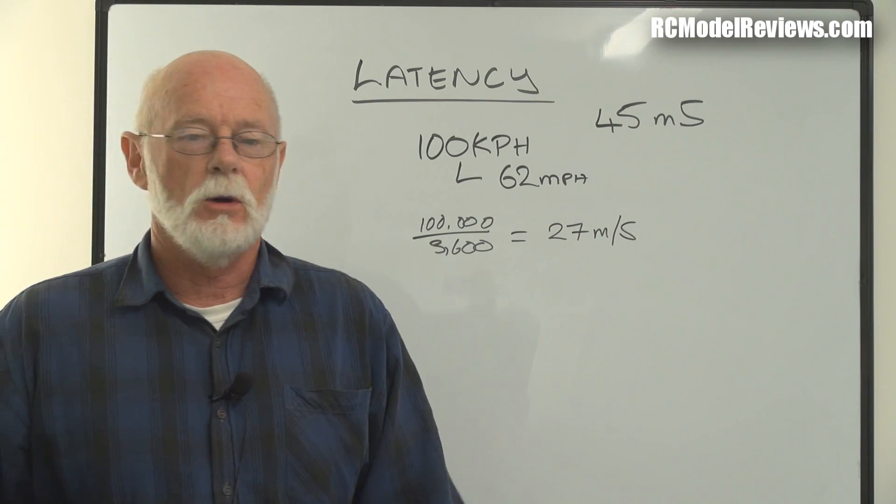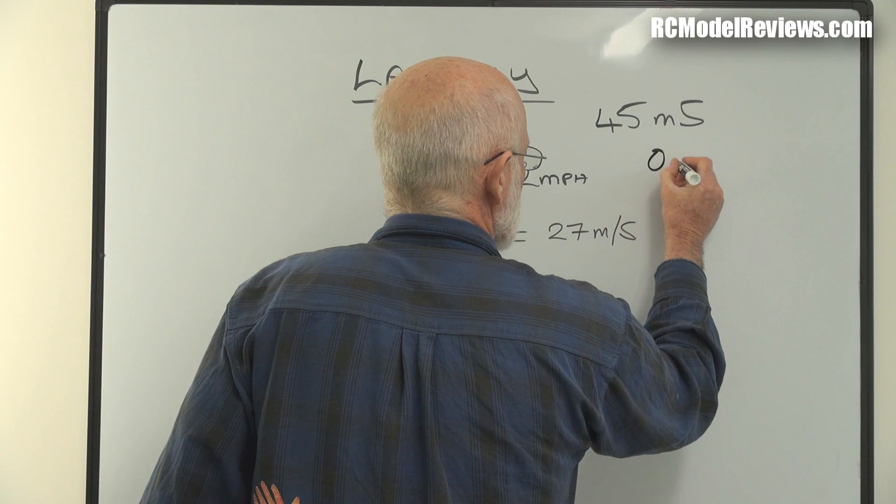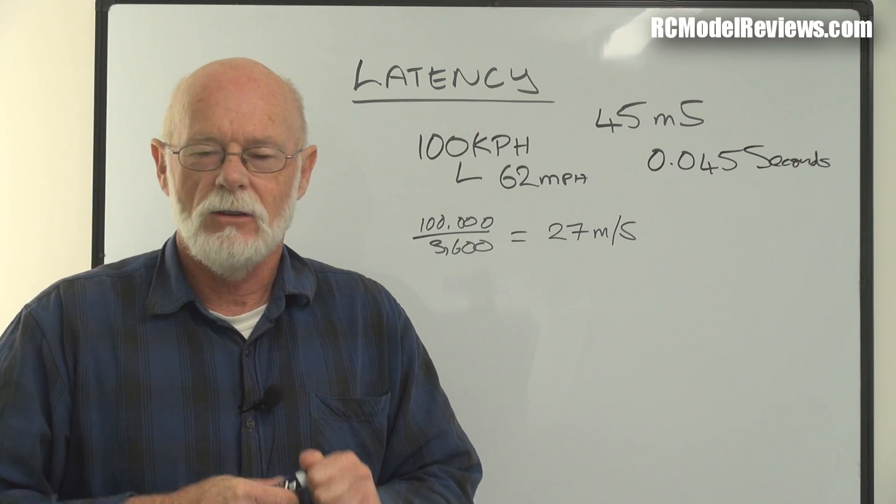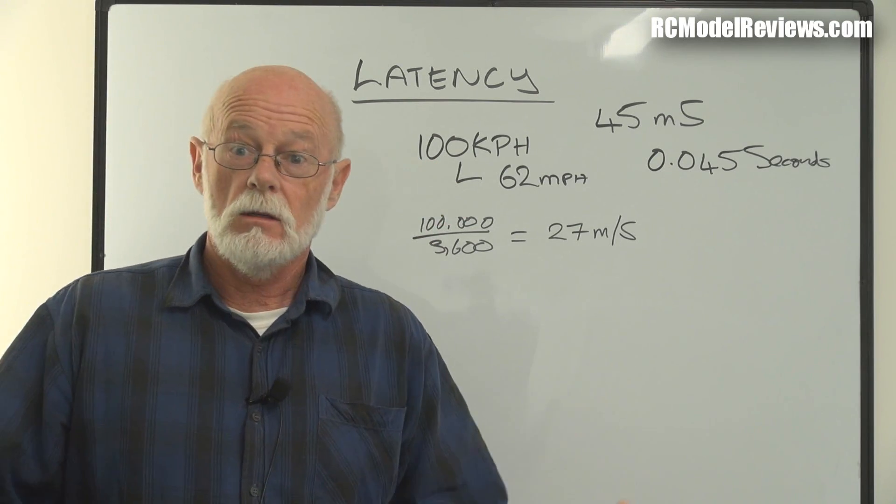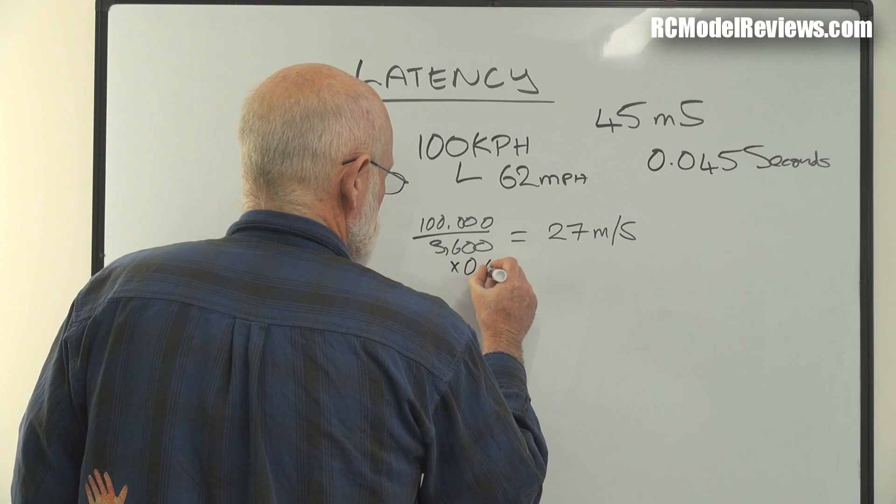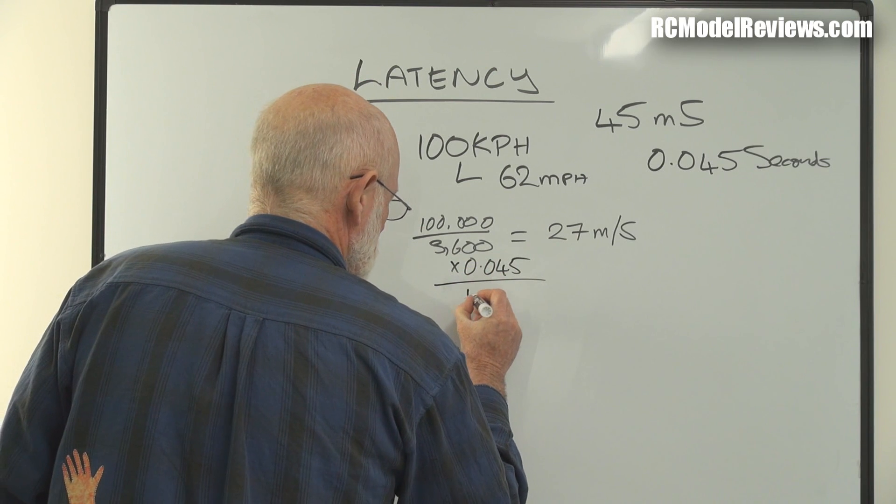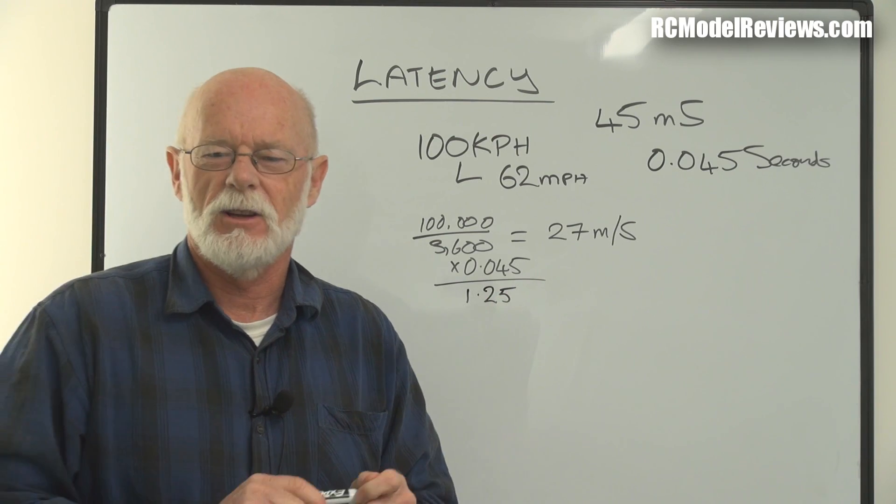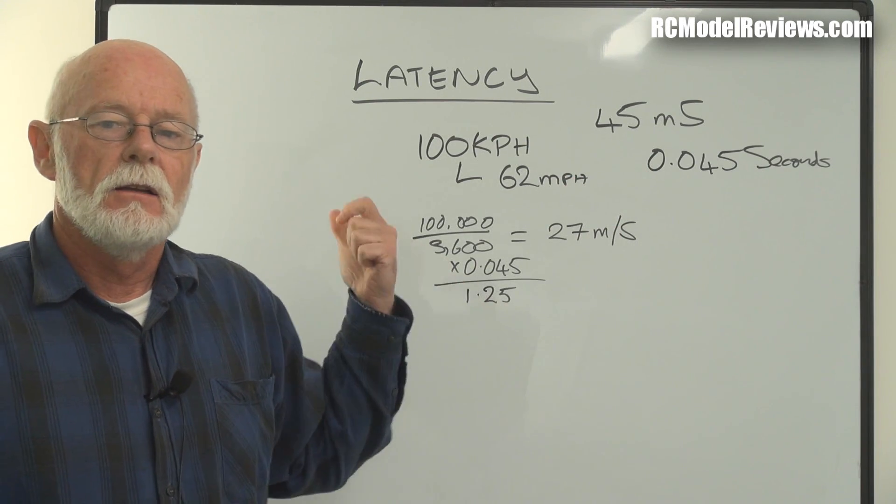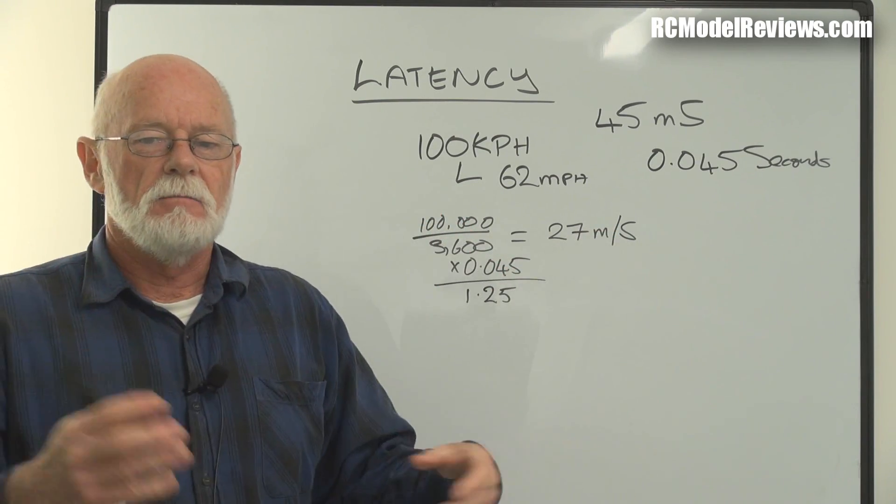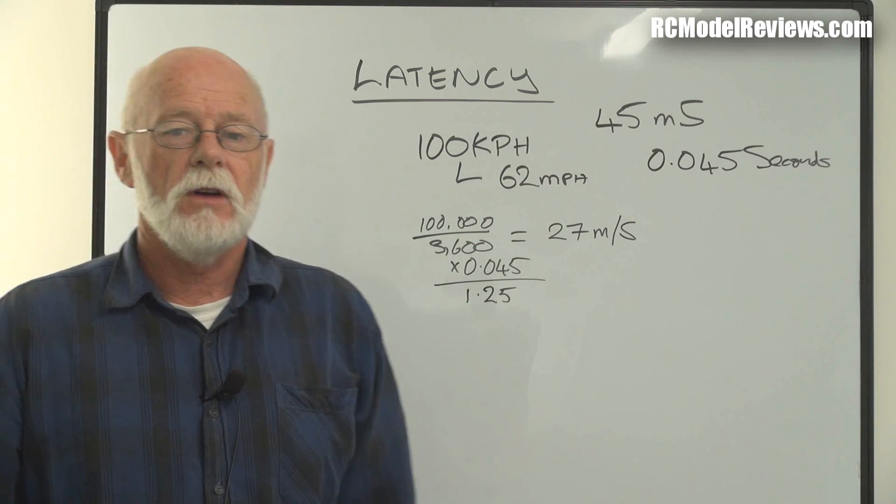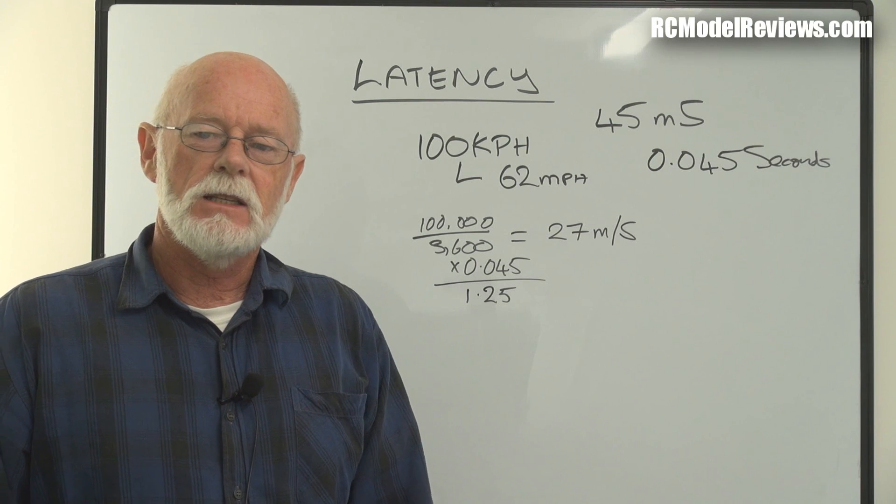But we're not talking about one second, we're talking about 45 milliseconds, which can also be written as 0.045 seconds. How far is this 100 kilometer an hour model traveling in 45 milliseconds? We multiply 27 by 0.045, and that gives us 1.25 meters. That's the distance this craft will travel during the 45 milliseconds that the Runcam Eagle is thinking about the picture, doing some crunching, manipulating it, and then converting those digital bits into analog bits to poke out to your video transmitter.